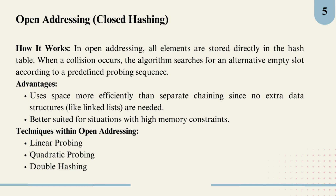With open addressing, we keep everything within the hash table itself. Instead of creating lists, we store each item directly in the table by probing for an empty slot whenever there is a collision. This method is beneficial for saving space since we don't need extra structures like linked lists. However, it requires careful probing strategies to avoid too many collisions and manage clustering. In the following slides, we will go over the three main types of probing techniques in open addressing: linear probing, quadratic probing, and double hashing.